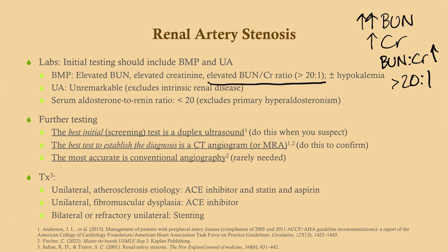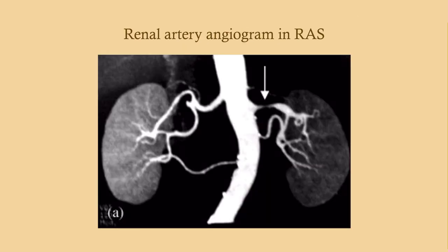Further testing: the best initial screening test is a duplex ultrasound. To confirm, use a CT angiogram. The most accurate test is conventional angiography, though CTA and MRA have largely replaced that. Treatment: if it's unilateral and atherosclerotic — most older patients — start an ACE inhibitor, a statin, and aspirin, because these patients have atherosclerosis and are at risk for coronary artery disease. If it's unilateral and due to fibromuscular dysplasia in a young person, just use an ACE inhibitor.